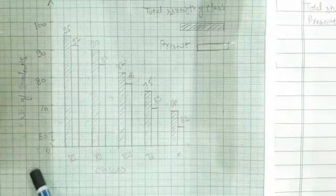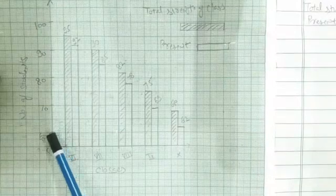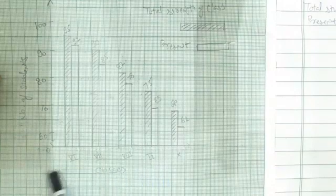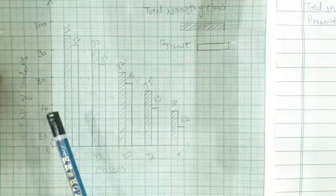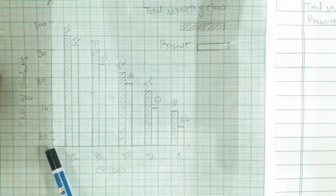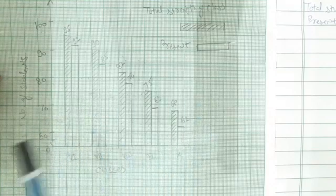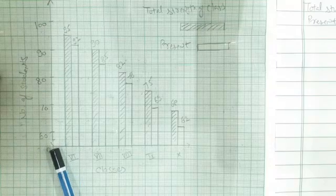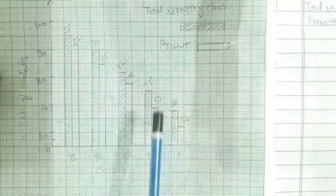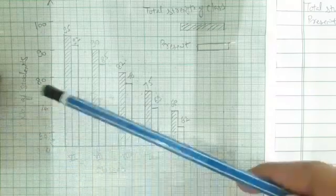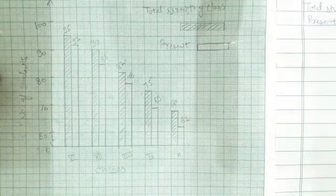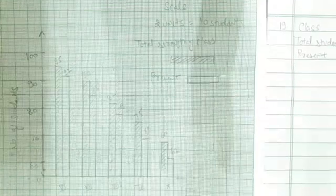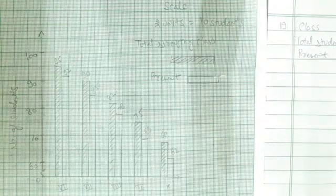Points to remember: we have to maintain equal distance between two classes and the bars must be of equal width. In this question we maintained a gap of 1 unit between each class while each bar has an equal width of 0.5 centimeters or 5 mm.